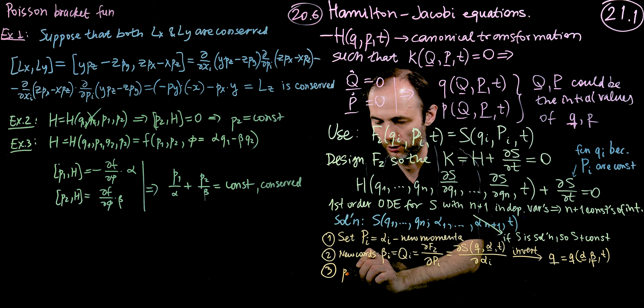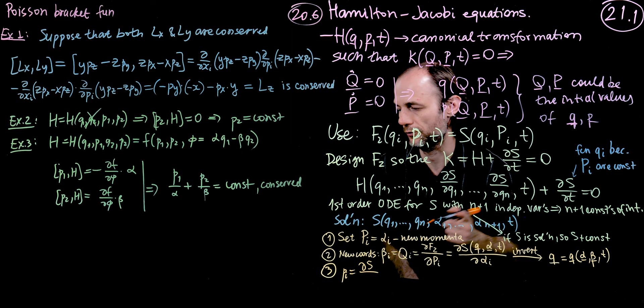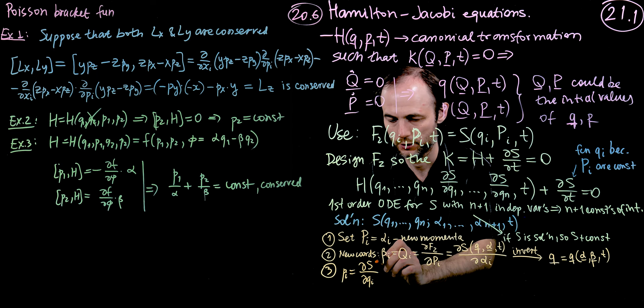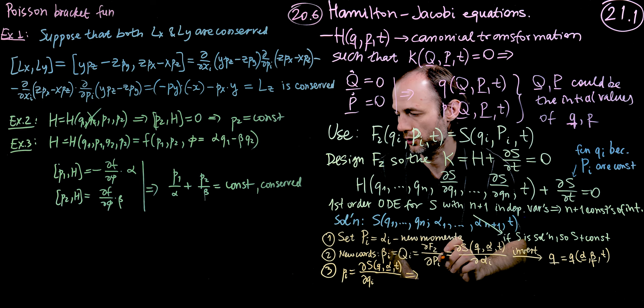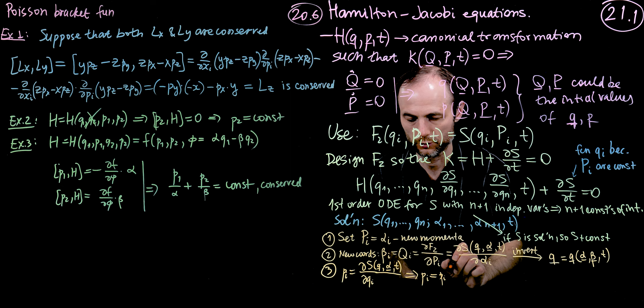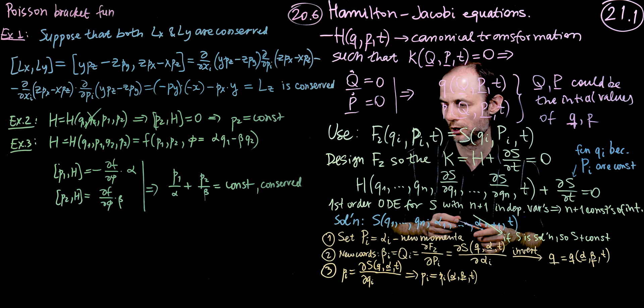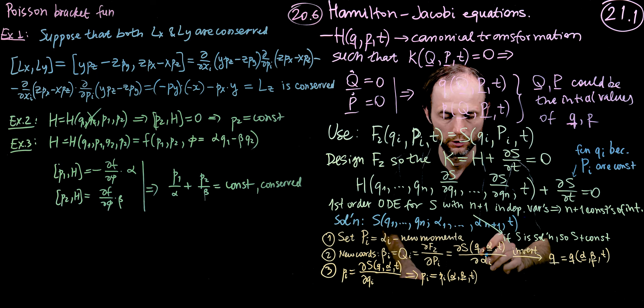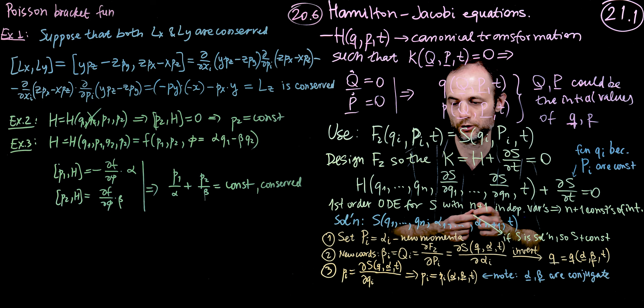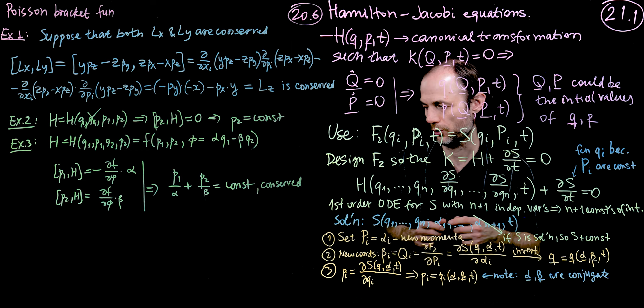Finally, we're going to be able to compute the old momenta by taking the partial derivative of the generating function with respect to the old coordinates, and the generating function will depend on q's, alphas, and time. And from here, we're going to get that our momenta, pi, are equal to function of alphas, betas, and time. So note here that alphas and betas are conjugate to each other. Remember that alpha are the new momenta and beta are the new coordinates.